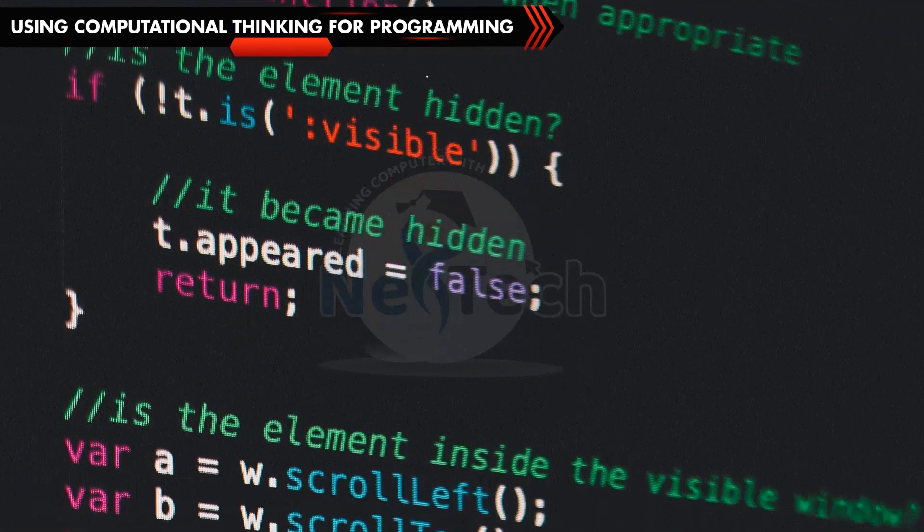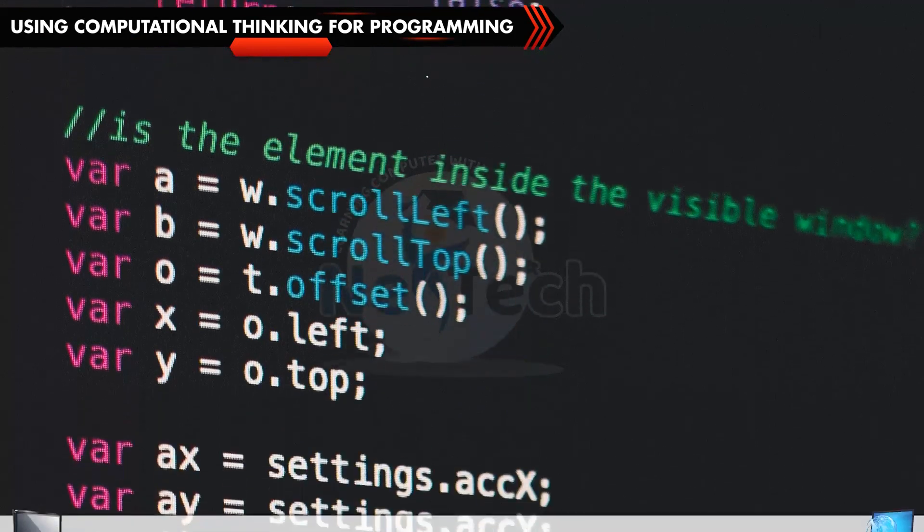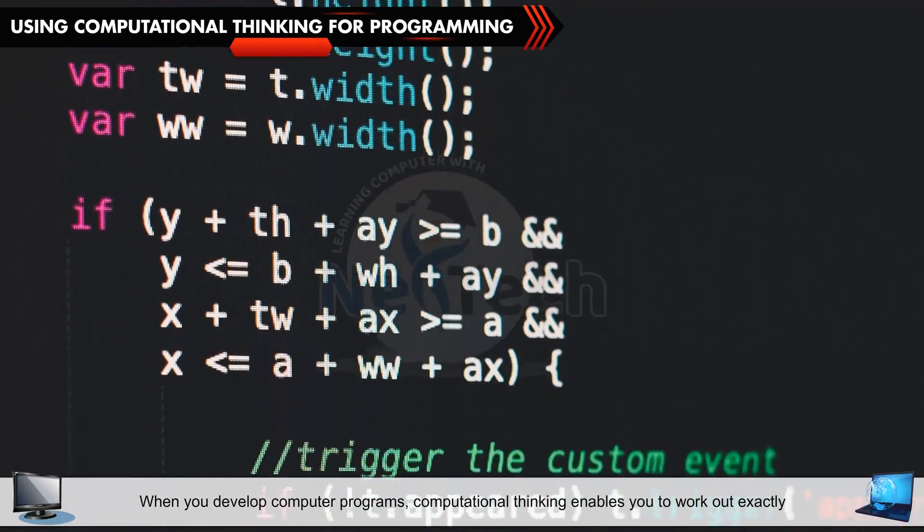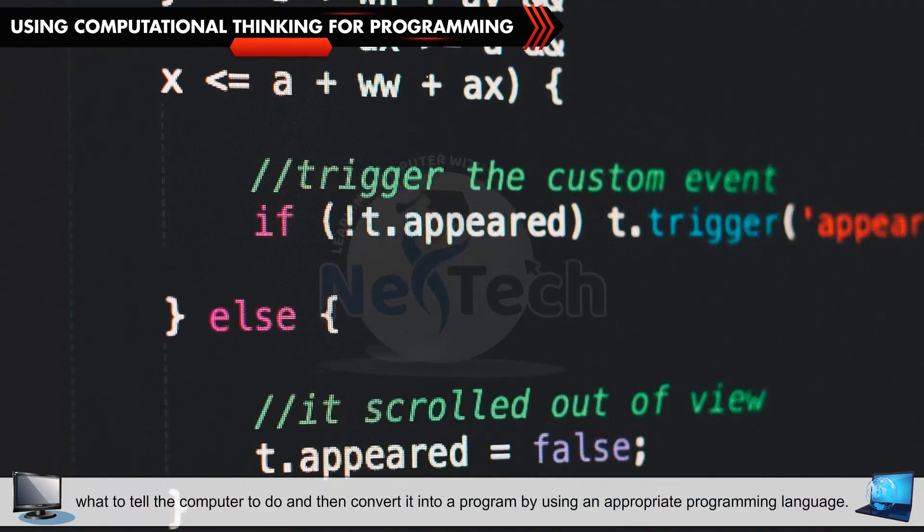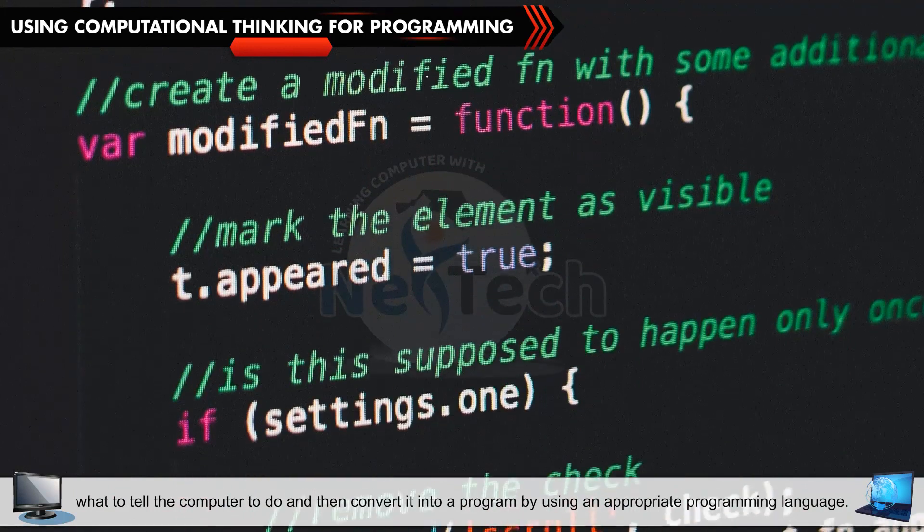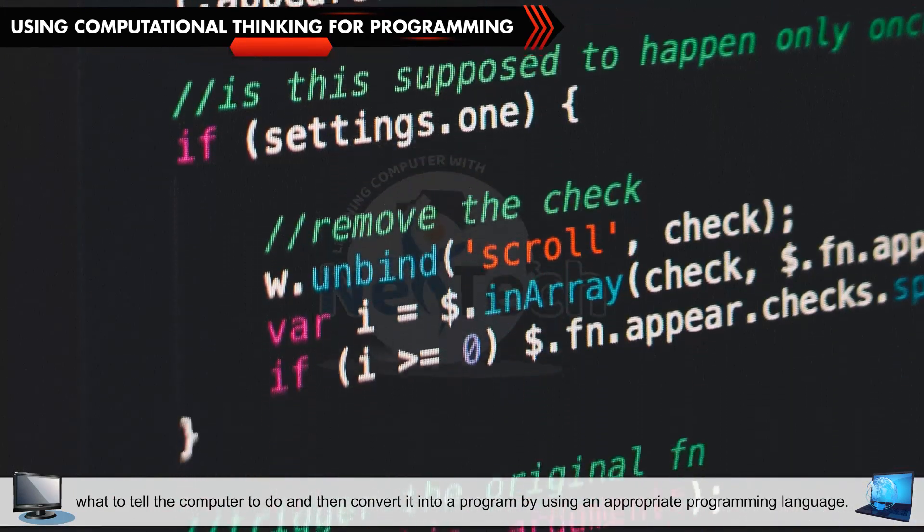Using computational thinking for programming: When you develop computer programs, computational thinking enables you to work out exactly what to tell the computer to do and then convert it into a program by using an appropriate programming language.